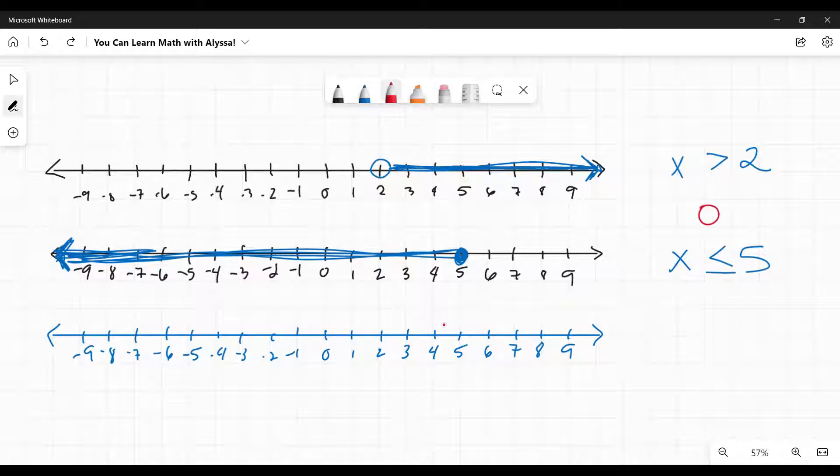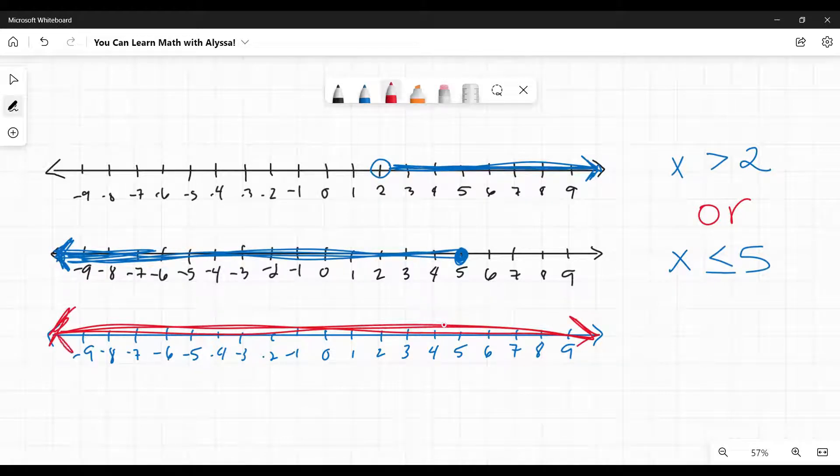What if they had said or, x is greater than 2 or x is less than or equal to 5? Now it's anything that's on either number line. So it's actually going to be the entire number line because they overlap. If I started that solid 5 and went to the left, and then I had an open at 2 and went to the right, they overlap. Every number is covered. You may be wondering, why don't I have an open circle here at 2? Well, that's because 2 is covered in this one. So it's an or. It's any number that is on either number line.